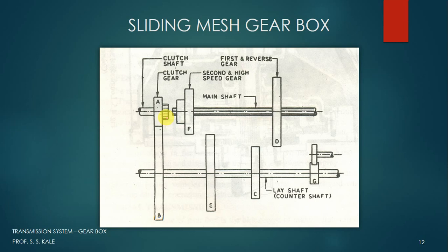On these particular shafts, we have different gears mounted. Gear namings are gear A, B, C, D, E, F, and G. These are various gears mounted on all three shafts. Gear A is connected on the clutch shaft and is firmly connected — meaning there is no relative motion allowed between gear A and the clutch shaft. Similarly, gears B, E, C, and G are also firmly connected on the lay shaft, so no relative motion is allowed.